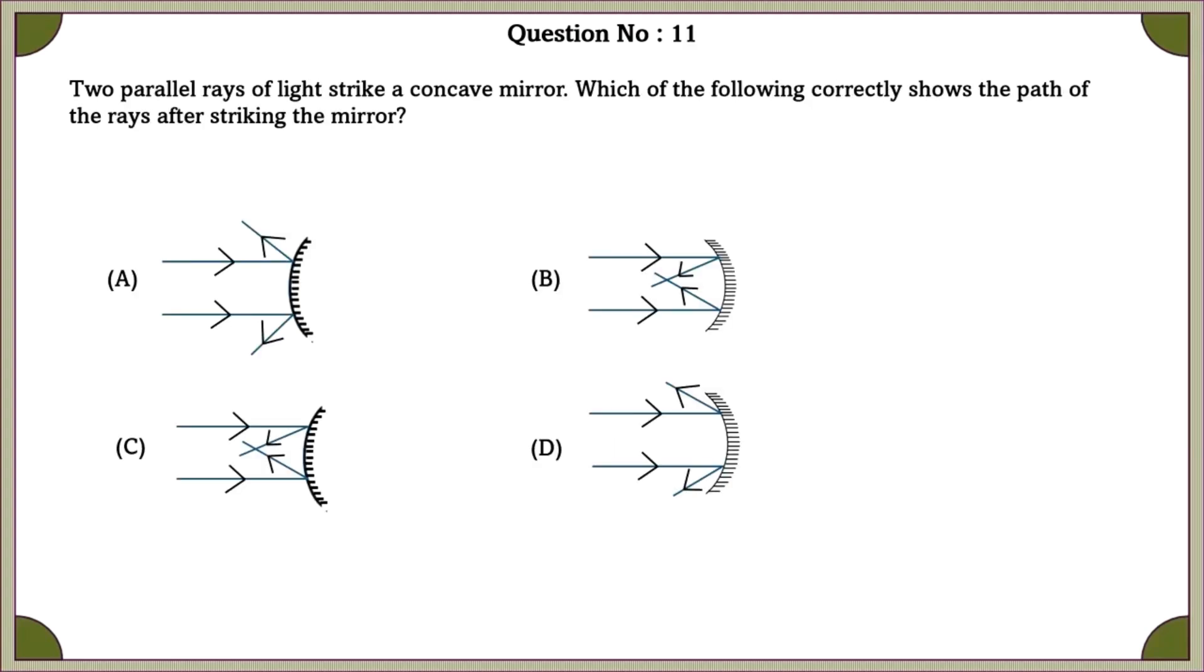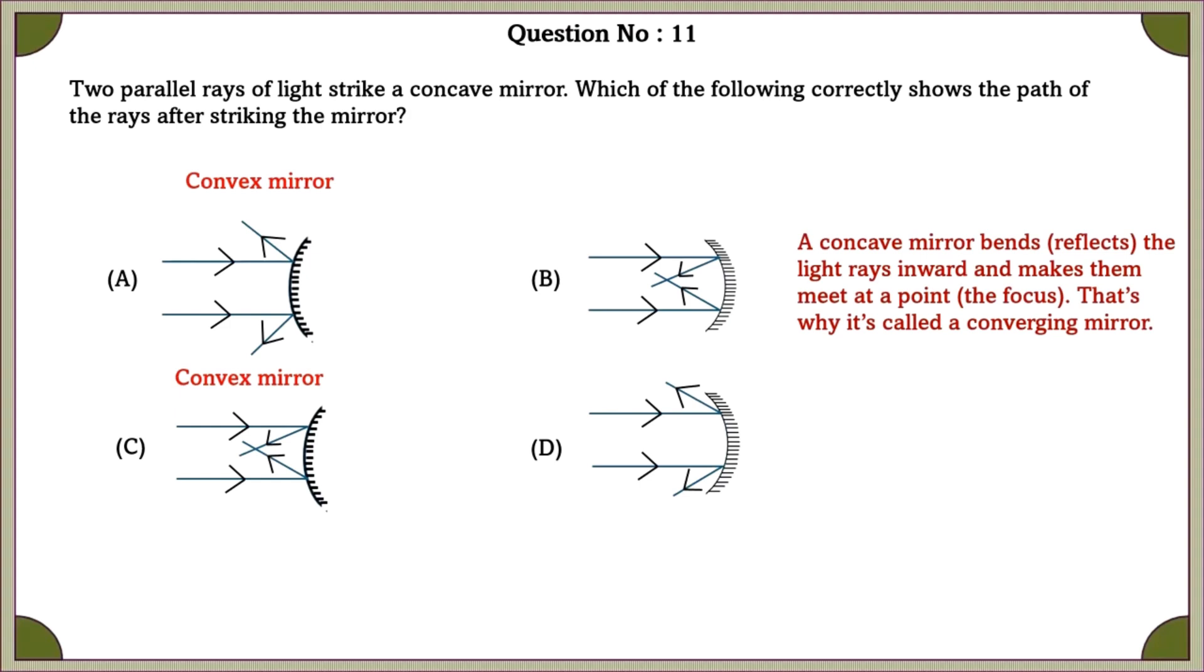Question number 11. Two parallel rays of light strike a concave mirror. Which of the following correctly shows the path of the rays after striking the mirror? If we see in the A and C option, they have given a convex mirror. Here, we only need a concave mirror. So, we can exclude the option A and C. A concave mirror bends the light rays inward and makes them meet at a point. That's why it's called a converging mirror. As we can see here, in the B option, we can see that the rays meet at a point, that is converging. But in the D, they don't meet at a point.